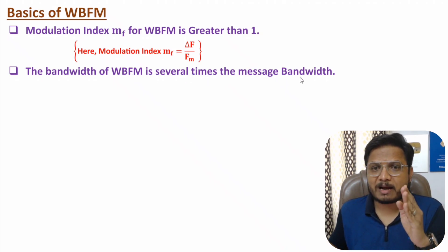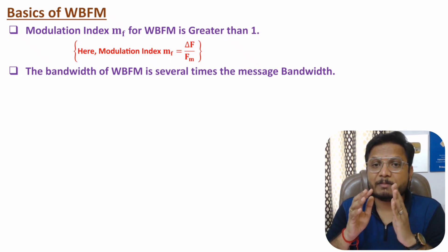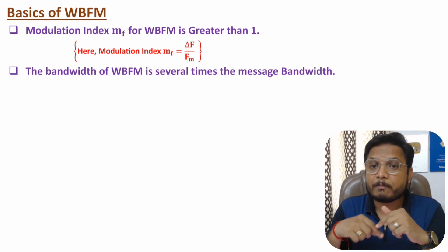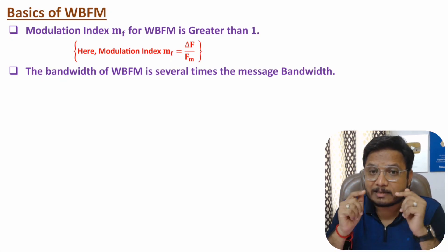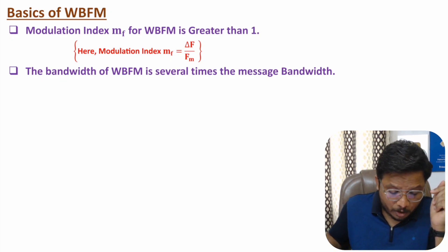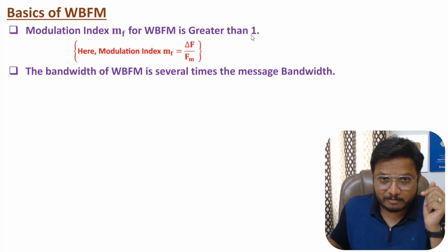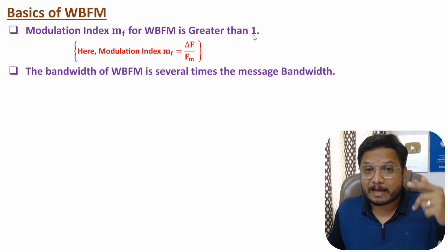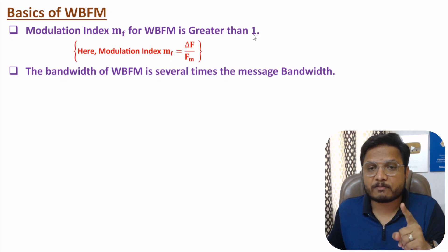For WBFM, the modulation index mf is greater than one. The bandwidth will be several times the message bandwidth. If the message bandwidth is fm, then with WBFM we will have several times the bandwidth of the message signal. That bandwidth depends on the value of modulation index, but obviously it is greater than one.